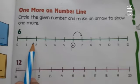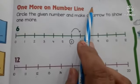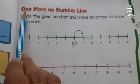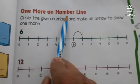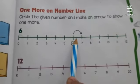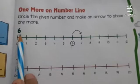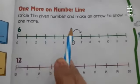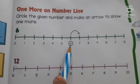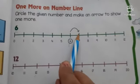Children, take out your theme book. Open the page number 102 and write down the date on the upper side. Children, read here. What instructions are written here? One more on number line. You will show one more on number line through an arrow. See, which number is written here? 6. So, first you will encircle the number 6. And you will show one more through an arrow. Fine.